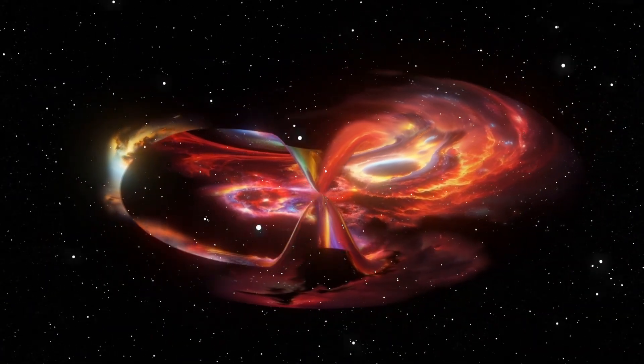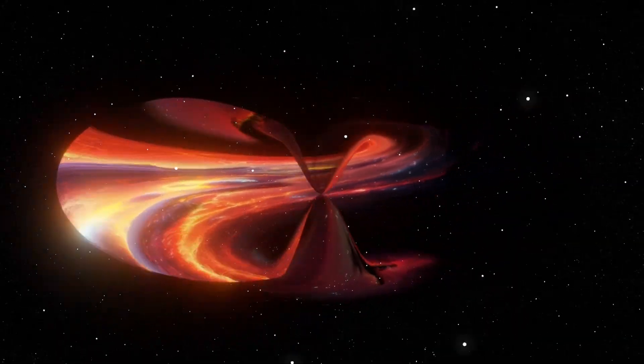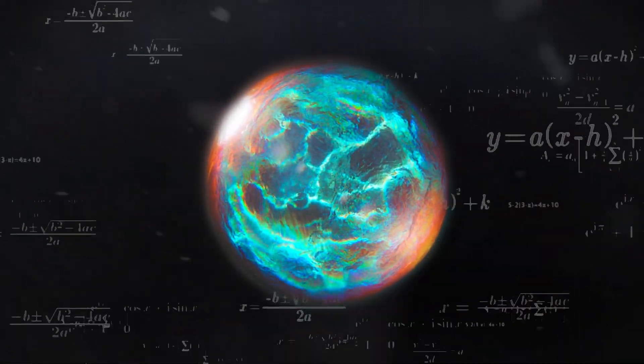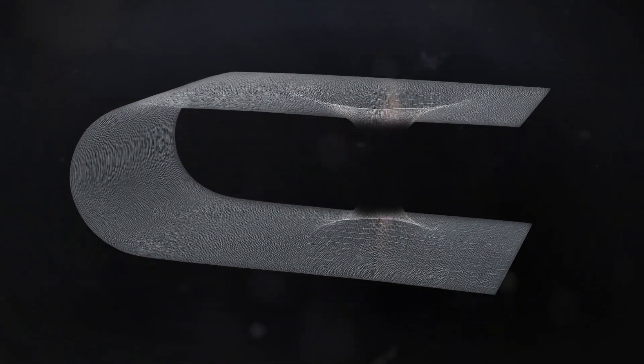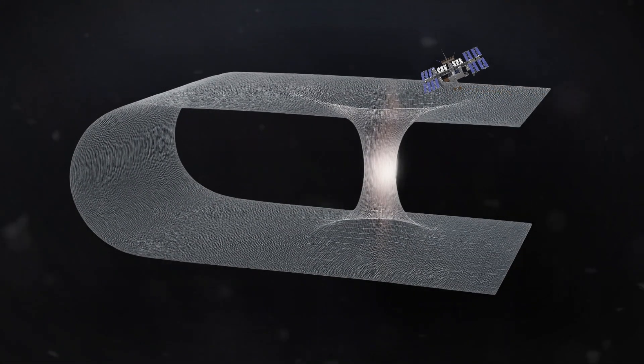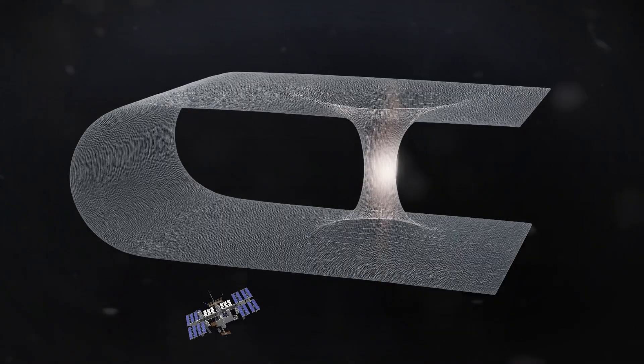First, we need to know what exactly a wormhole is. It is a theoretical structure predicted by Einstein's general relativity. It's a solution to the equations of spacetime where two distant regions are connected through a tunnel-like shape when spacetime is bent in an extreme way.